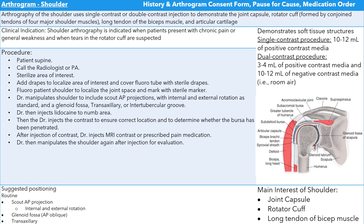Suggested positioning will be scapular internal and external rotation, the Grashey view, and the transaxillary or intertubercular groove. The main areas of interest of the shoulder are the joint capsule, rotator cuff, long tendon of the bicep muscle, and articular cartilage. A single contrast procedure uses about 10 to 12 milliliters of positive contrast media. A dual contrast procedure consists of 3 to 4 milliliters of positive contrast media and 10 to 12 milliliters of negative contrast media, which would be room air.